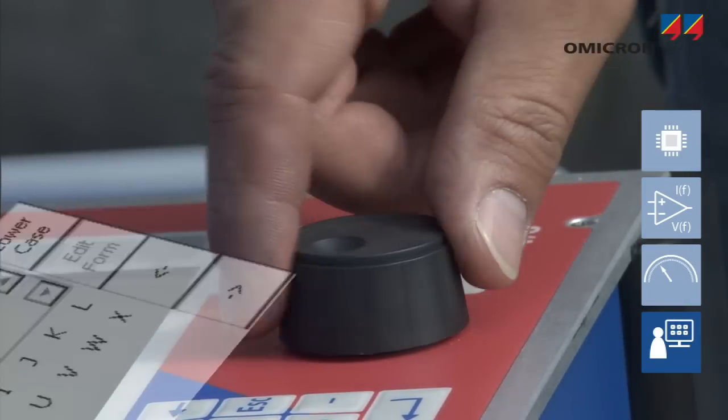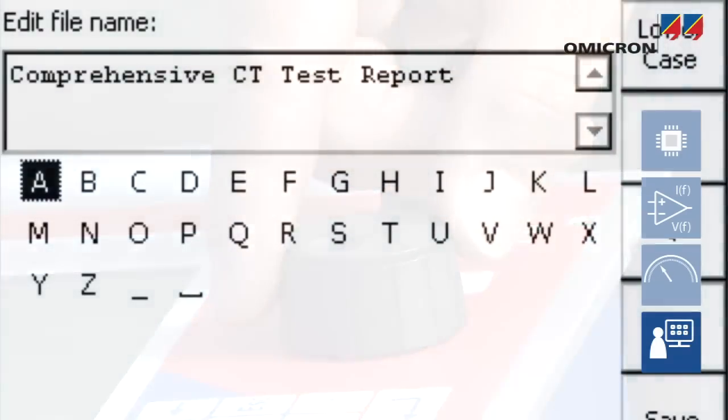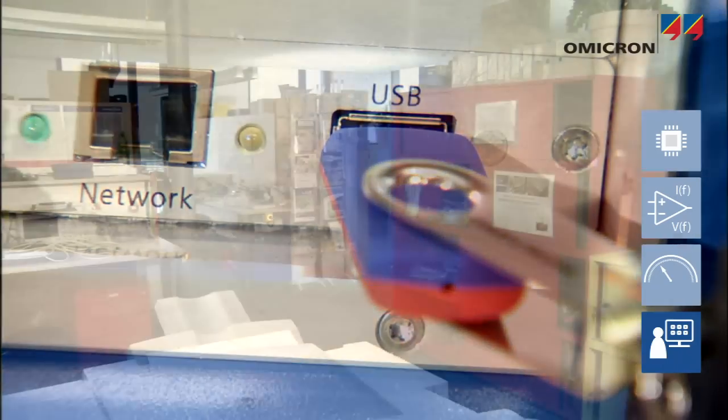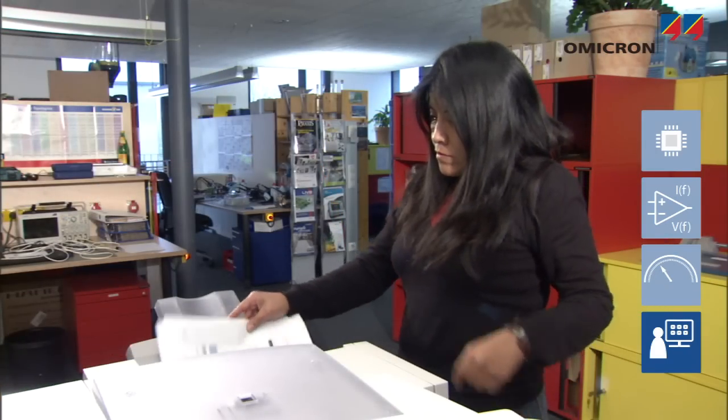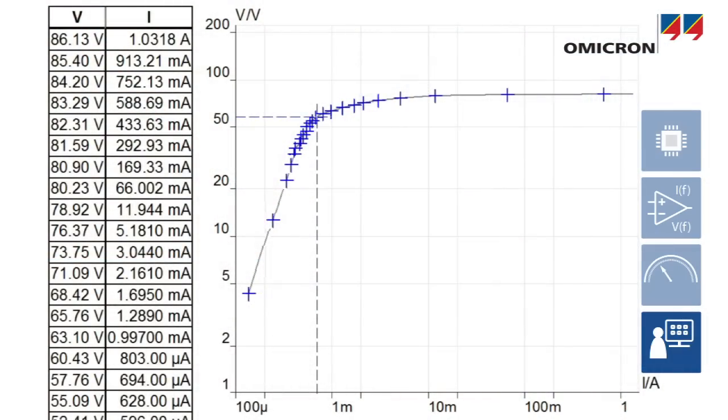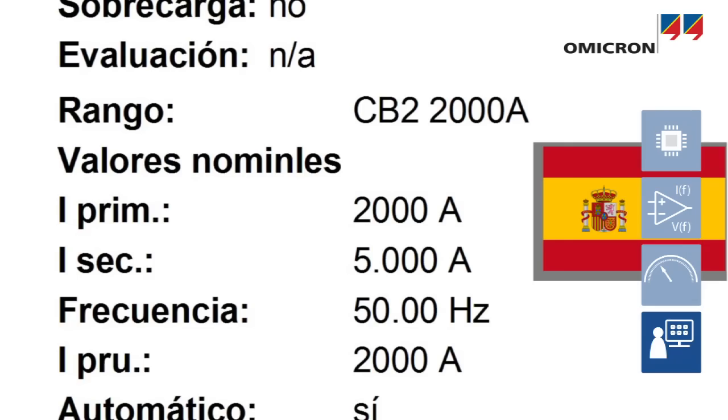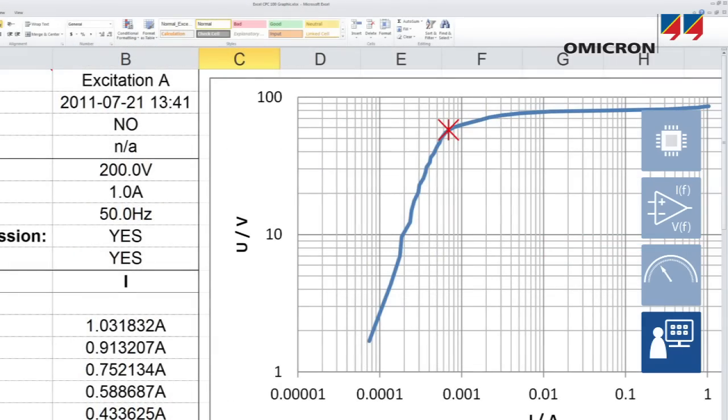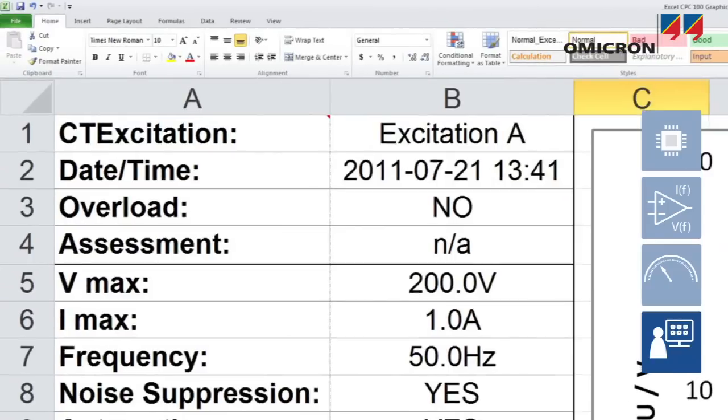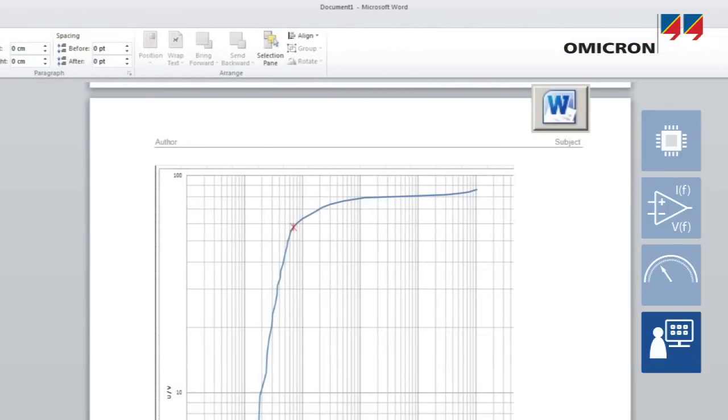All settings and results can be stored on an integrated flash memory card or an external USB stick. One click generates a comprehensive report. The language used in the report can be changed at any time. To customize the report or integrate logos, the results can be imported into MS Excel or Word.